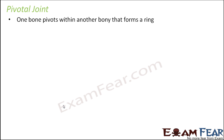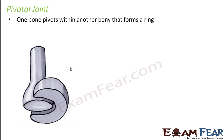The next type of joint is the pivotal joint. Here one bone pivots within another bone that forms a ring. As you can see, you have one bone which pivots within another bone structure that forms a ring. Let's call this bone number 1 and this structure as 2.